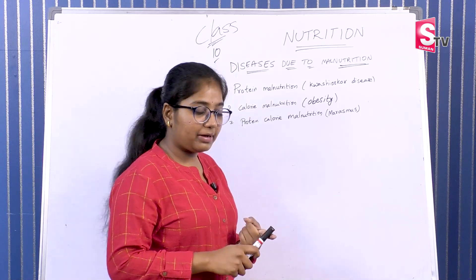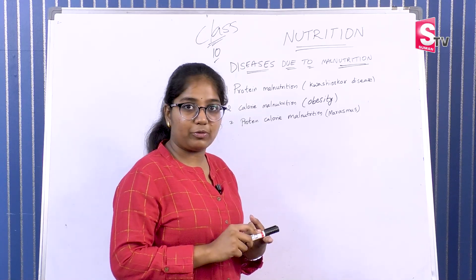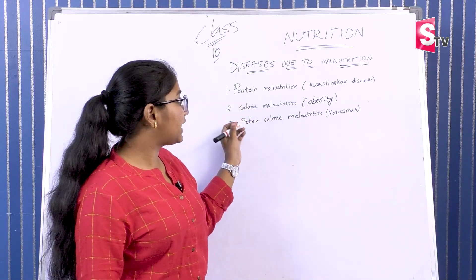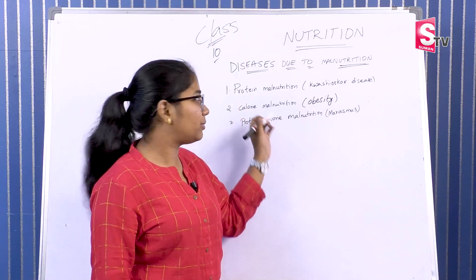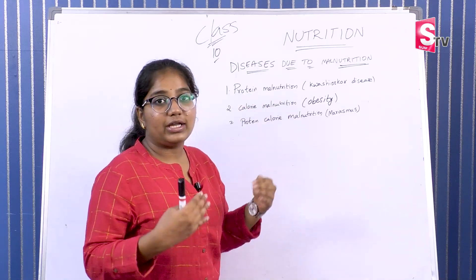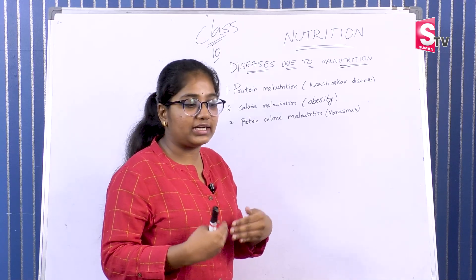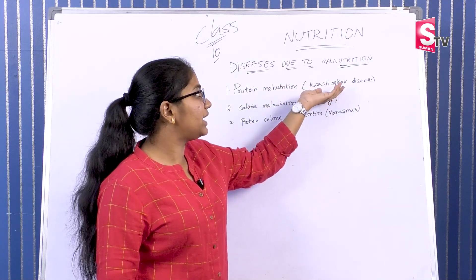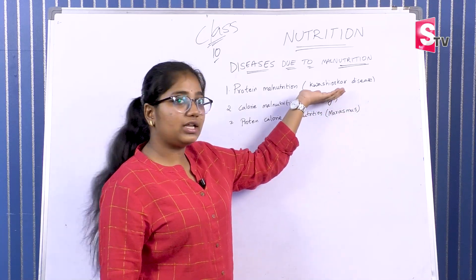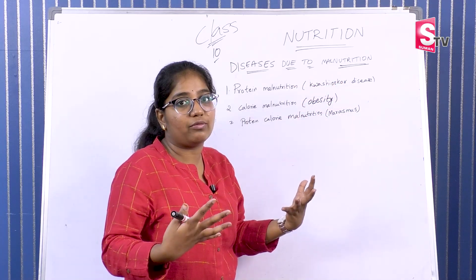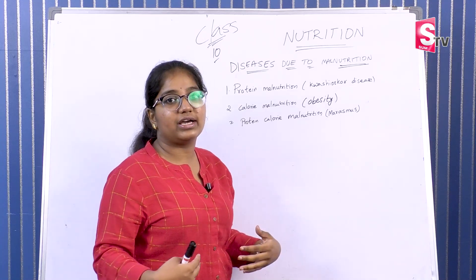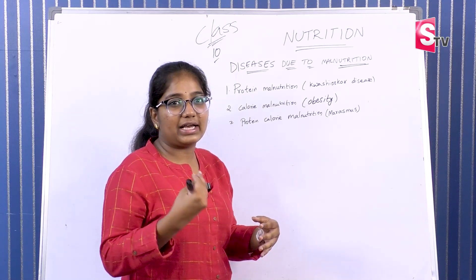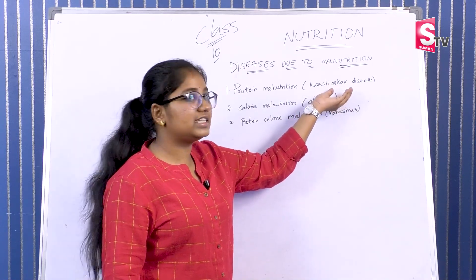Malnutrition is a disease. If the body has a protein deficiency, it causes protein malnutrition. The best example is Kwashiorkor disease. Symptoms include water retention, swelling in the body, dry skin, and diarrhea.